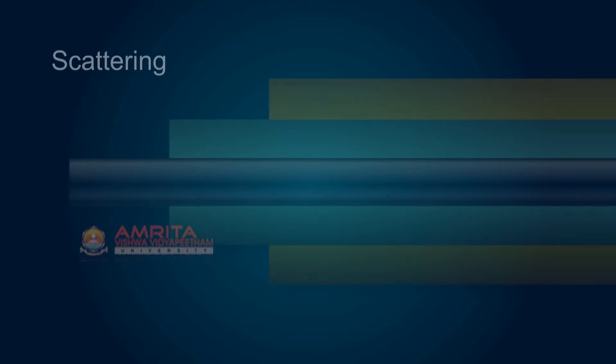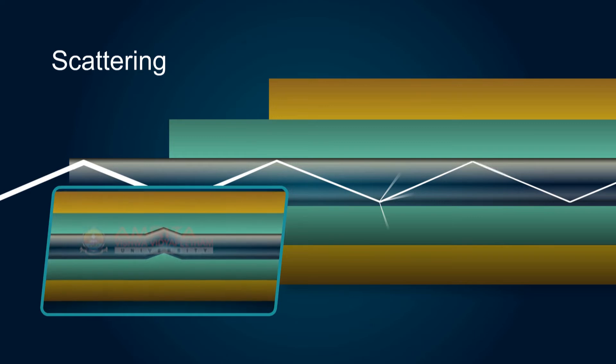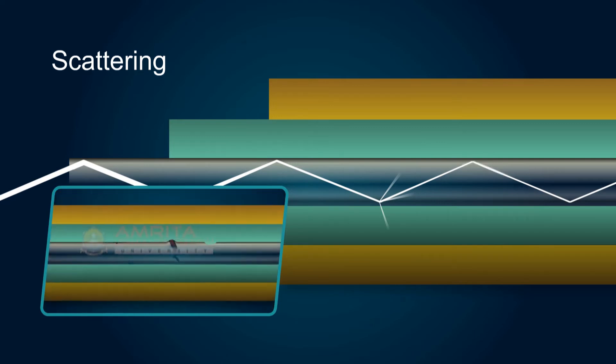Scattering occurs due to microscopic variations in the material density, compositional fluctuations, structural inhomogeneities, and manufacturing defects.